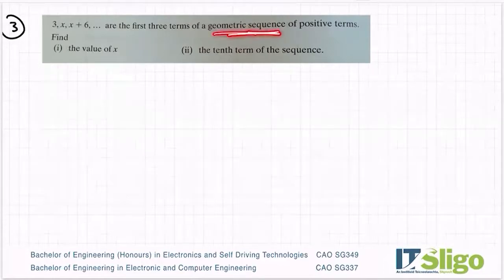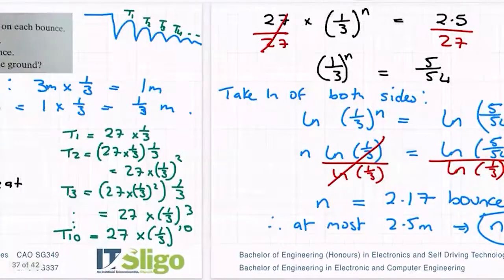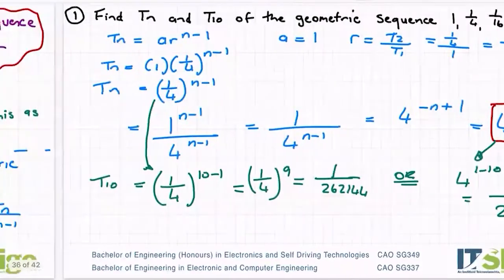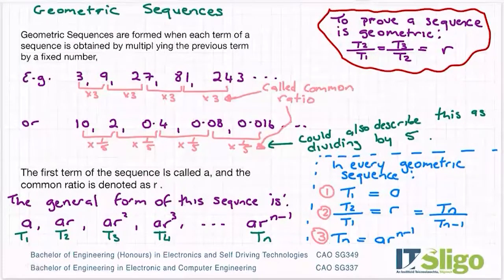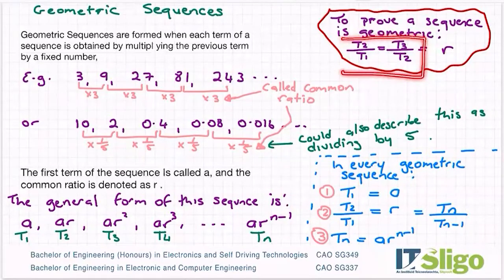They've told us it's a geometric sequence. Let's go back to our theory page. What can we use for it? So what we're going to use is the fact that in a geometric sequence, T2 over T1 is equal to T3 over T2.